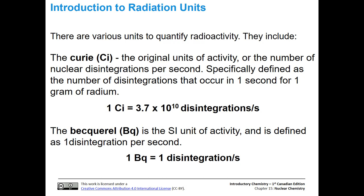The first unit is the Curie, which is the original unit, defined as the number of nuclear disintegrations per second. It was specifically defined as the number of disintegrations that occur in one second for one gram of radium. The Curie, abbreviated as capital Ci, is 3.7 times 10 to the 10 disintegrations per second. The Becquerel is the SI unit of activity, abbreviated as capital Bq, and is defined as one disintegration per second.